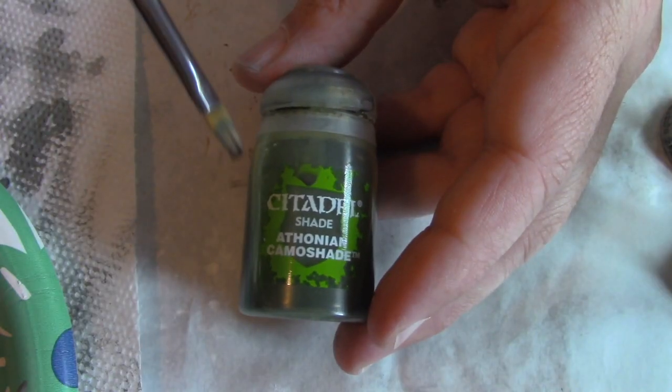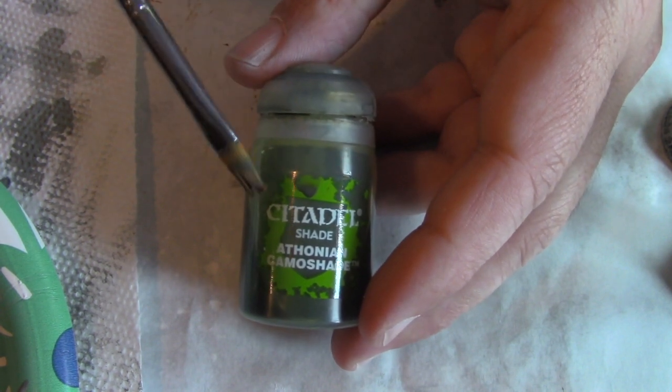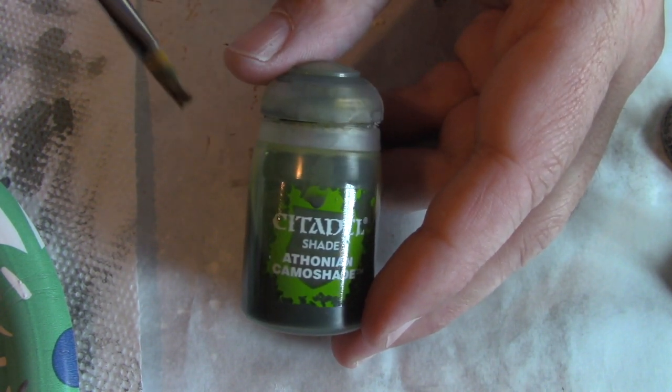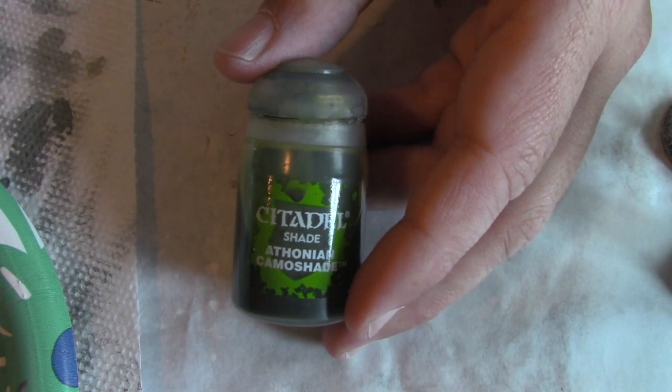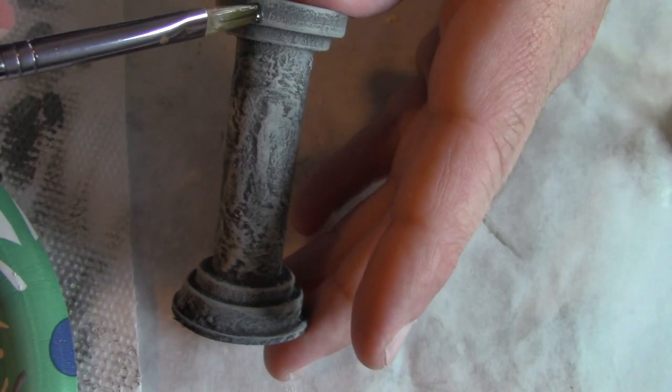I have a Citadel called Athonian Camoshade. It's really dark green wash. Any dark green wash will do. I dip the brush directly in the pot and you can start at the top.